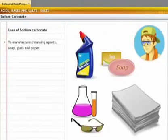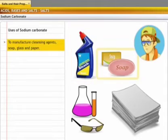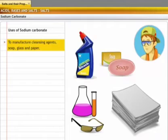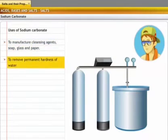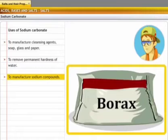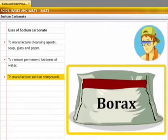How is this sodium carbonate useful to us? Sodium carbonate is used to manufacture cleansing agents, soap, glass, paper, etc. It is also used for removing the permanent hardness of water. It is used to remove the dissolved salts in the water and make the water clean for drinking. It is even used to manufacture sodium compounds like borax which is used as a cleansing agent.